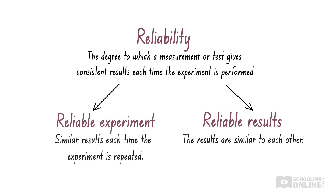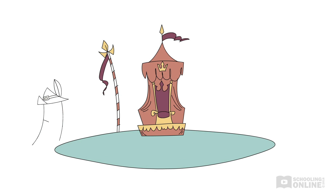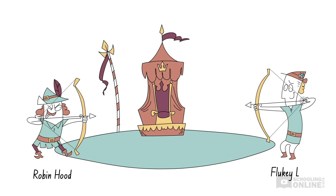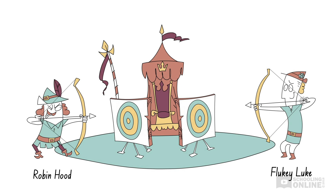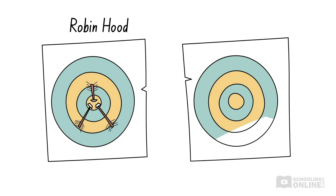To help us understand reliability, let's return to our archery competition. Robin Hood and his competitor, Fluky Luke, each have three arrows to fire at their targets. As usual, Robin Hood hits the bullseye with each of his three shots. Fluky Luke takes the stage and lands his first arrow in the bullseye.